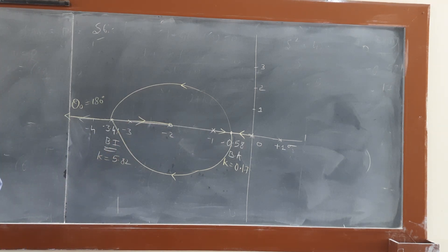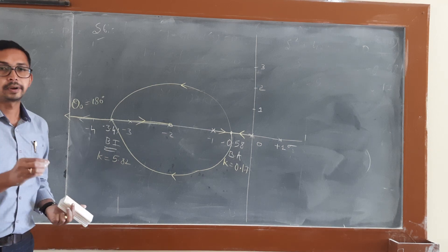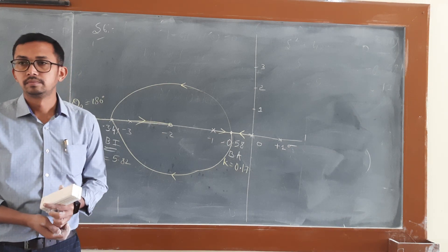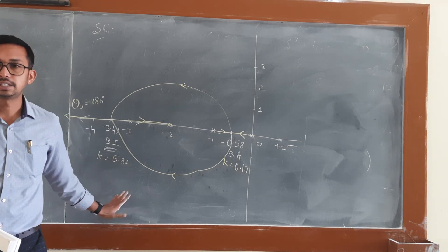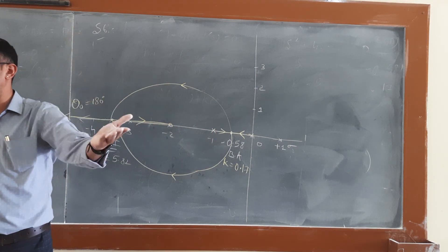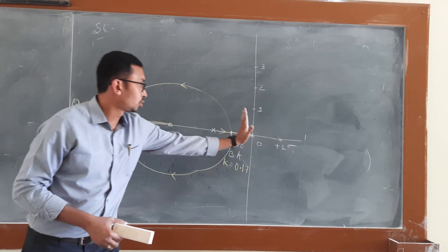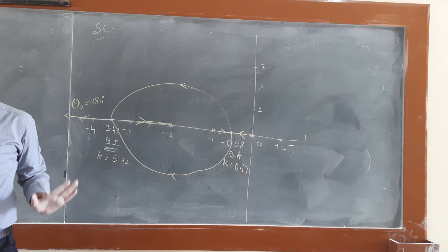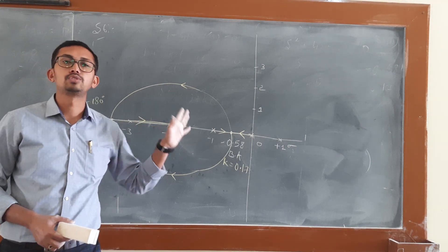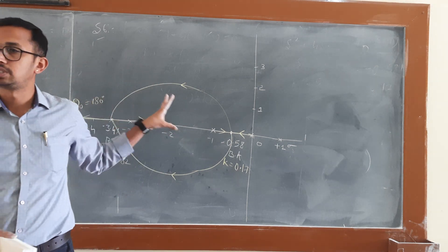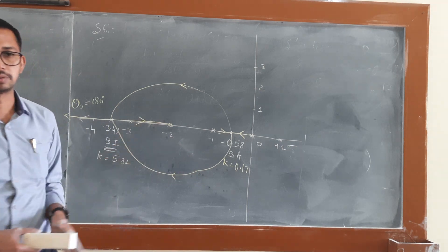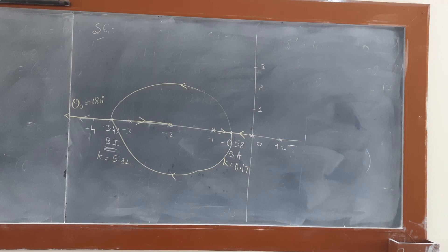Finally, the comment on stability: for all values of K greater than 0, the entire root locus lies to the left side of the s-plane. Hence the system is stable for all values of K greater than 0.